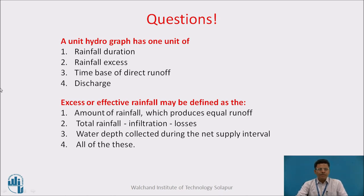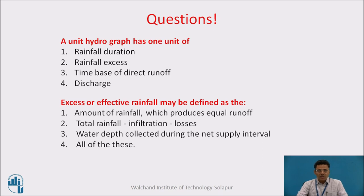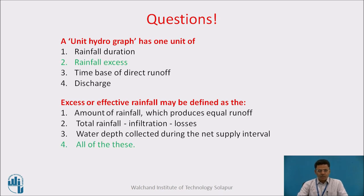Let us take some questions. A unit hydrograph has one unit of: (a) rainfall duration, (b) rainfall excess, (c) time base of direct runoff, or (d) discharge. Another question: excess or effective rainfall may be defined as the amount of rainfall which produces equal runoff; total rainfall minus infiltration minus losses; water depth collected during the net supply interval; or all of the above. The answers: a unit hydrograph has one unit of rainfall excess, and excess or effective rainfall is given by all three definitions — 1, 2, and 3.